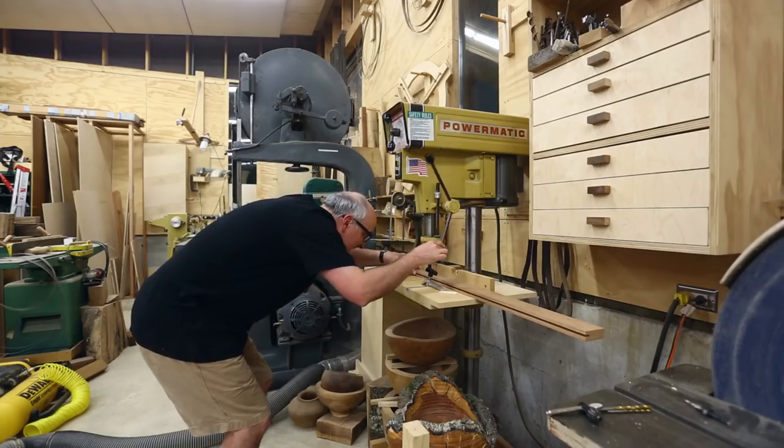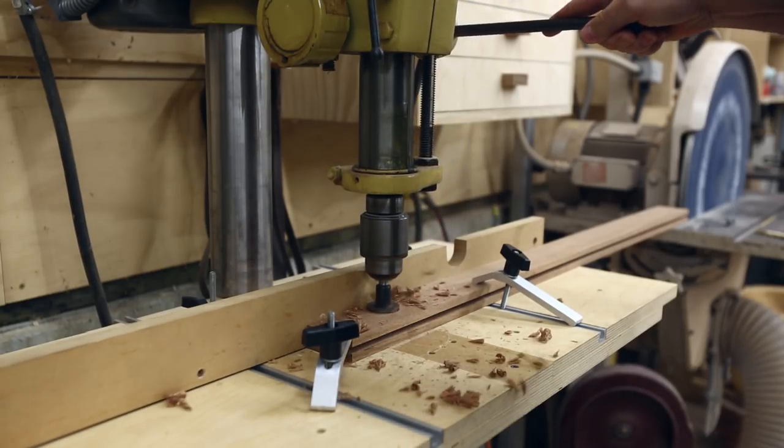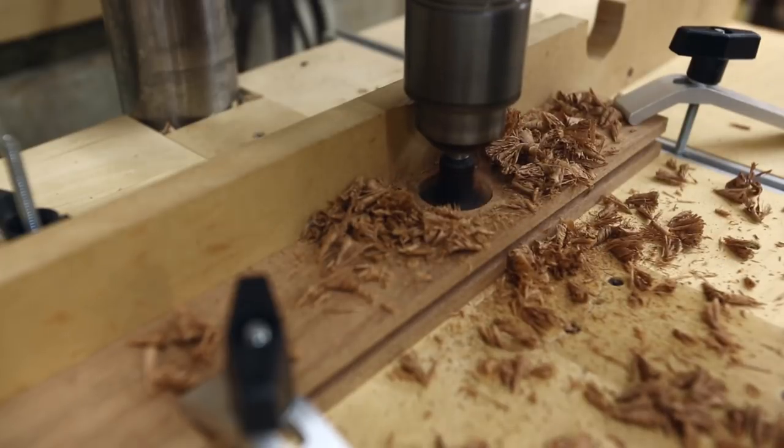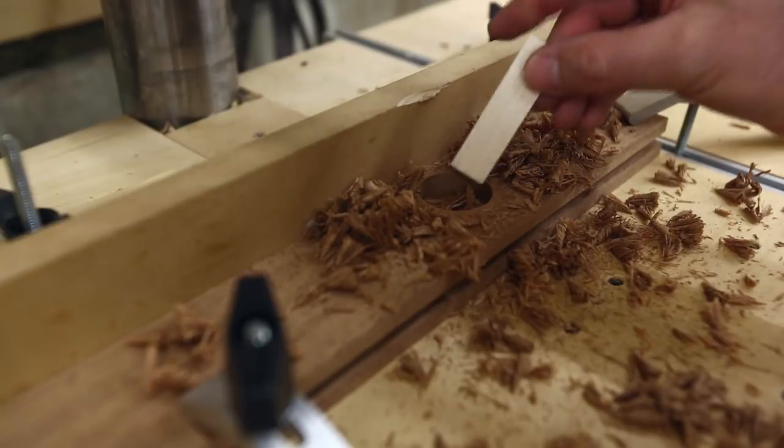Before I glue the pieces together, I thought I could drill the holes for the hinges. So I did that. It's a 35 millimeter diameter hole and it's at least 11 millimeters deep.